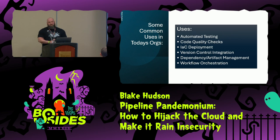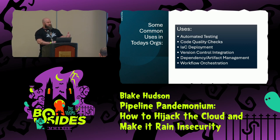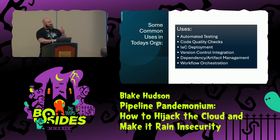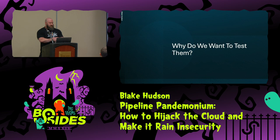Some common uses for CI/CD pipelines are automated testing and code quality checks to catch errors earlier, version control, artifact management, and workflow orchestration. The one I want to highlight is IAC deployment — infrastructure as code. Large organizations with a big cloud presence aren't going to do click-ops in the management console, because that's where mistakes happen. They define everything in code at massive scale. Today we're focusing on that infrastructure as code management portion, specifically GitHub Actions and AWS — though it can apply to any cloud provider.